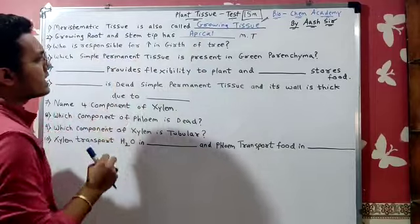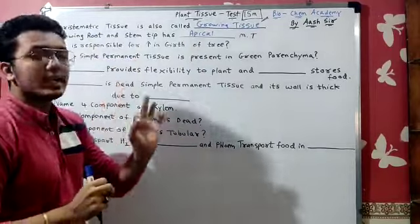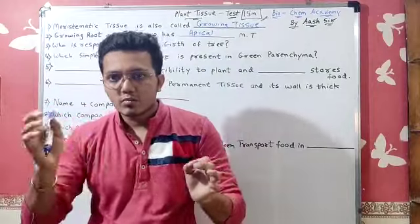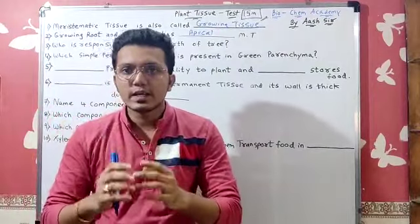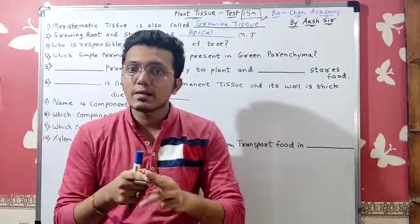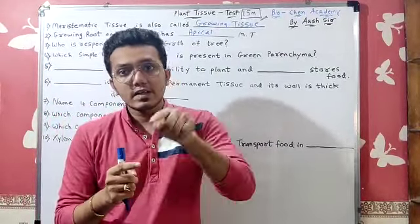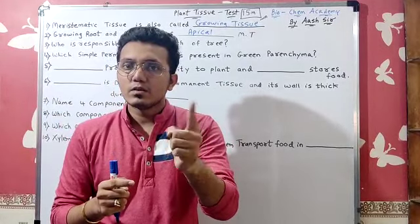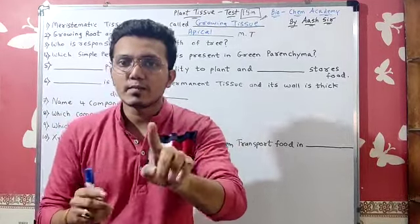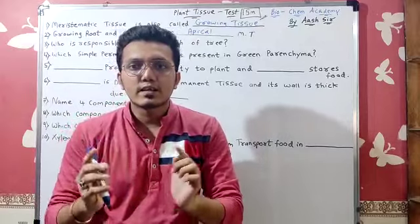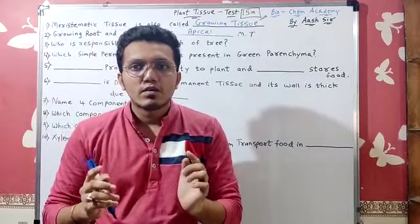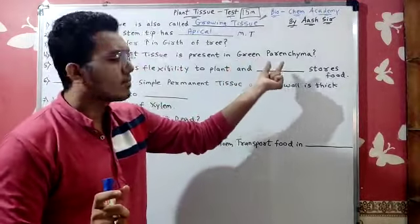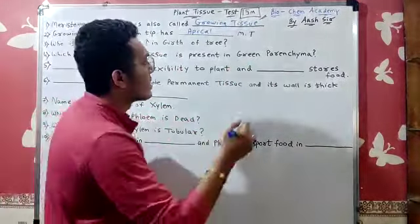Which simple permanent tissue is present in green parenchyma? Permanent tissue is two types: simple and complex. Simple can be three types: parenchyma, collenchyma, sclerenchyma. Parenchyma can be two types. If green color is present, chlorophyll is in it, so it is called chlorenchyma. So what is green parenchyma? Chlorenchyma.